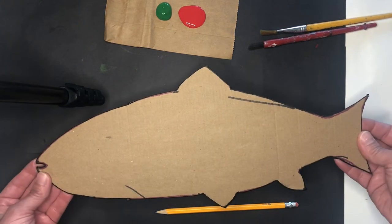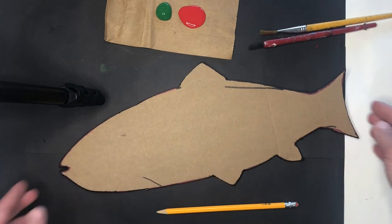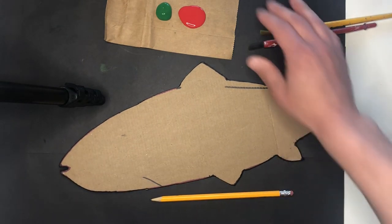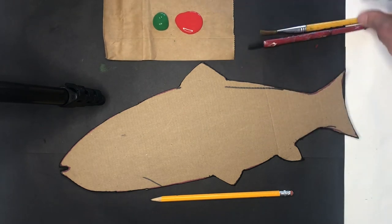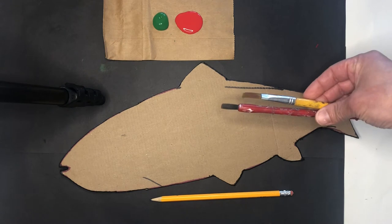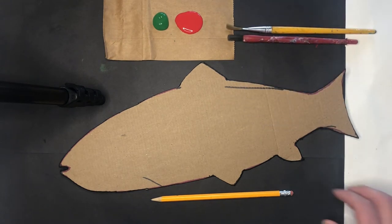All right, so you'll need your salmon cutout. Everyone got a cardboard cutout of a salmon like this in your last art supply pickup. You'll need a pencil, your red and green paint, and a paintbrush and water cup, or I'm just going to use two paintbrushes today, one for each color. All right, so the first thing we're going to do, I'm going to go back to that photo.